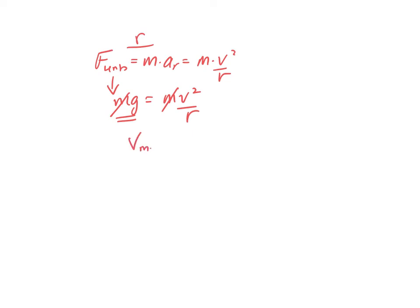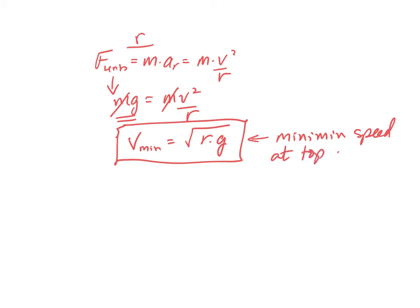So the minimum speed would be equal to the square root of r times g. So whatever the radius is, times g, and then take the square root would give me the minimum speed for any roller coaster car that goes over the inside loop like that at the top point.